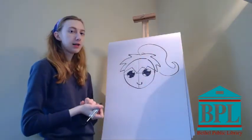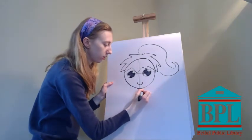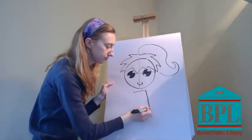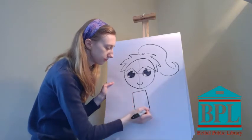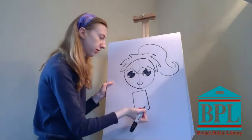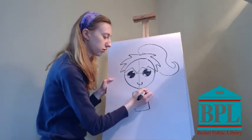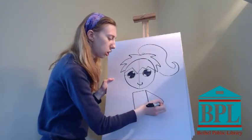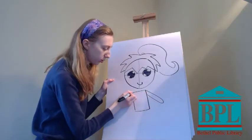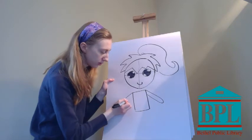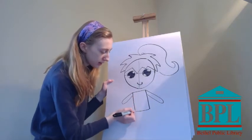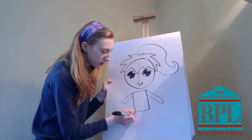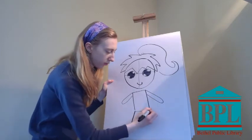So next for the body, I'm going to draw a rectangle right under my circle. And I'm going to draw for my arms, I'm just going to draw sort of like a really long U coming off of the top of the rectangle. And the legs, I'm going to draw lines coming off of my rectangle.